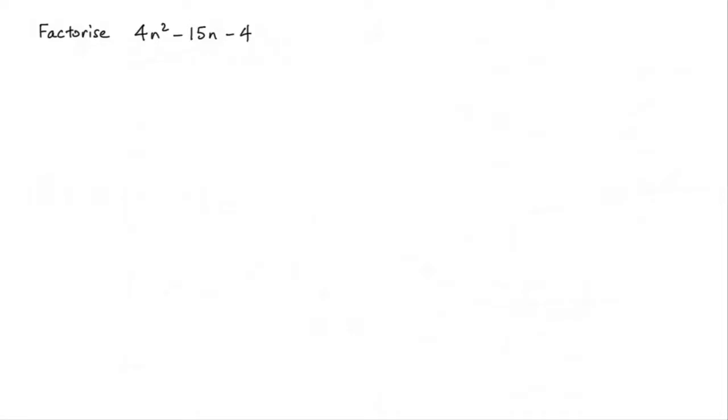In this lesson we're asked to factorize 4n squared minus 15n minus 4. Now I'm going to use what they call the magic x method and it's quite a simple process.